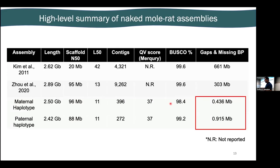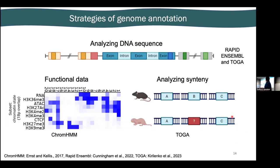As a high-level summary, we can see much more contiguity in assemblies that used Hi-C data. But what's quite striking is a 750-fold decrease in gaps between our long read-based assembly and the short read-based assembly, which is somewhat intuitive since we know short reads are inherently unable to span about 40% of the genome — very promising for assembly.